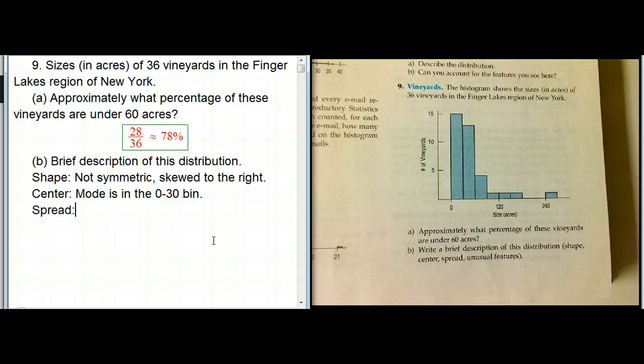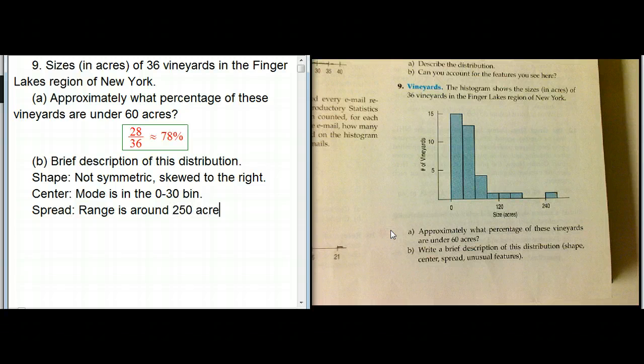And the spread - there's not a really nice measure of spread here. We can, again, we'll get more quantitative versions of the measures of spread, but we could at least say that the range is around - it goes from somewhere near 0 to somewhere over 240, maybe around 250 acres. So the total range between min and max is somewhere around 250 acres. We're never going to be exact with a histogram because they didn't give us the exact data, and that's okay.